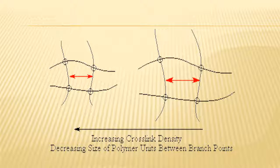Next, here's the picture. You can see how cross-linking density affects the size of polymer units between the branch points. On the right side you can see a big square, and on the left side it's smaller because increasing cross-link density makes the size of polymer units get smaller.